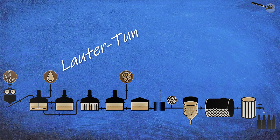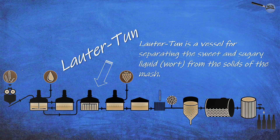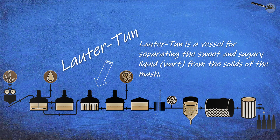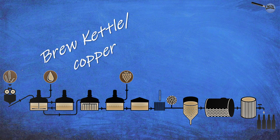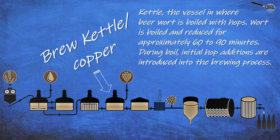The lauter tun is a vessel for separating the sweet and sugary liquid from the solids of the mash. The brew kettle, or copper kettle, is the vessel where the beer wort is boiled with hops.